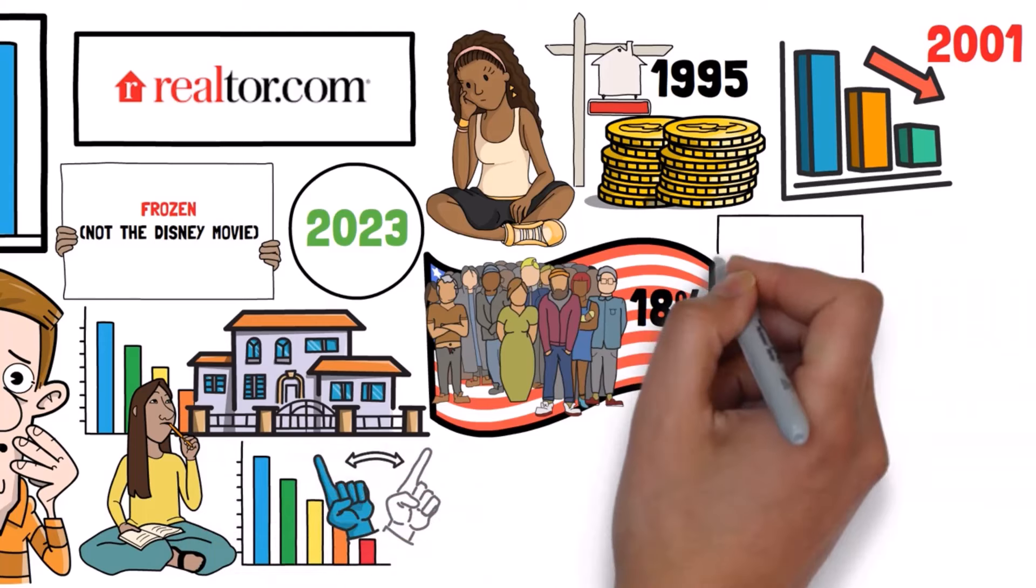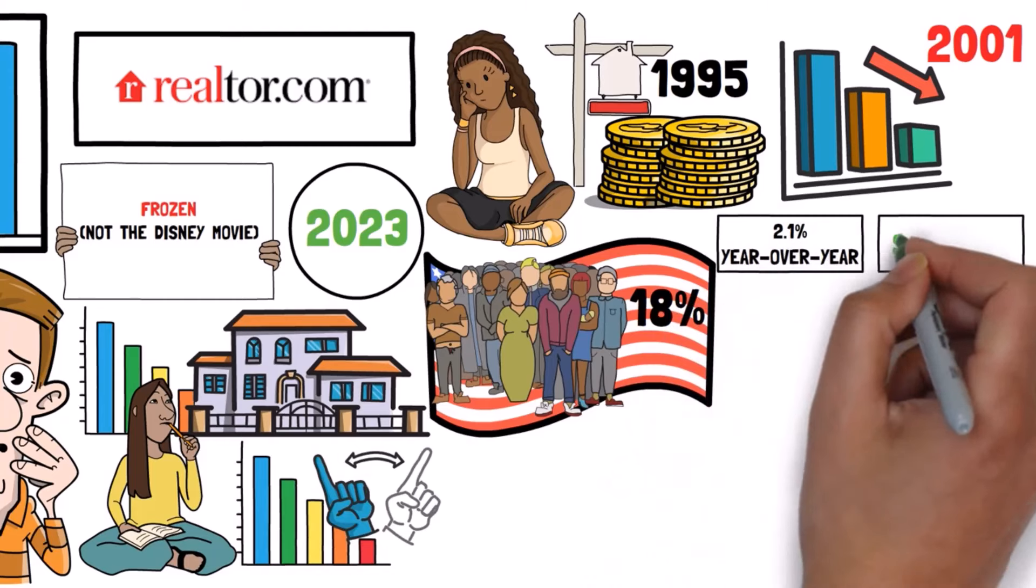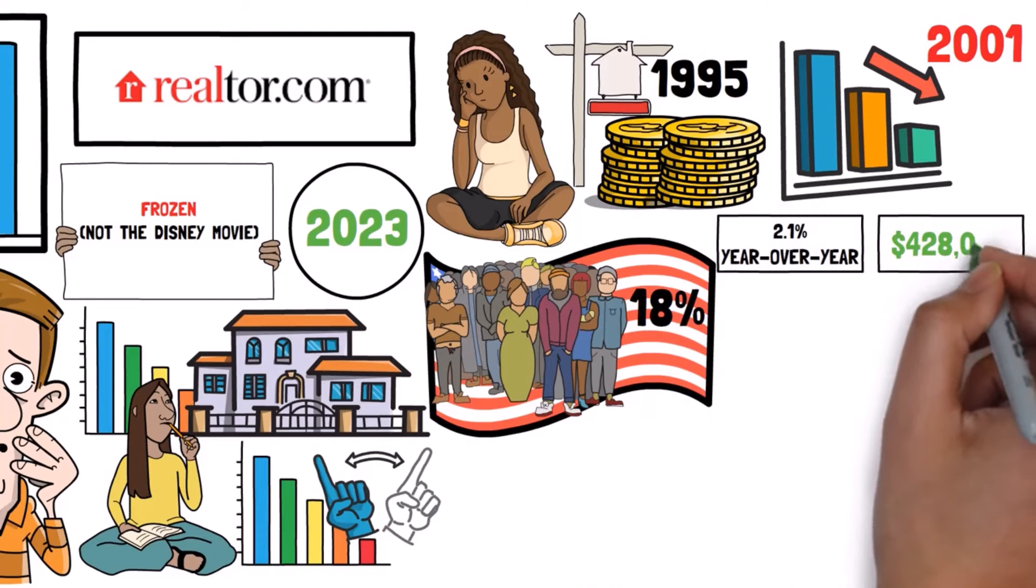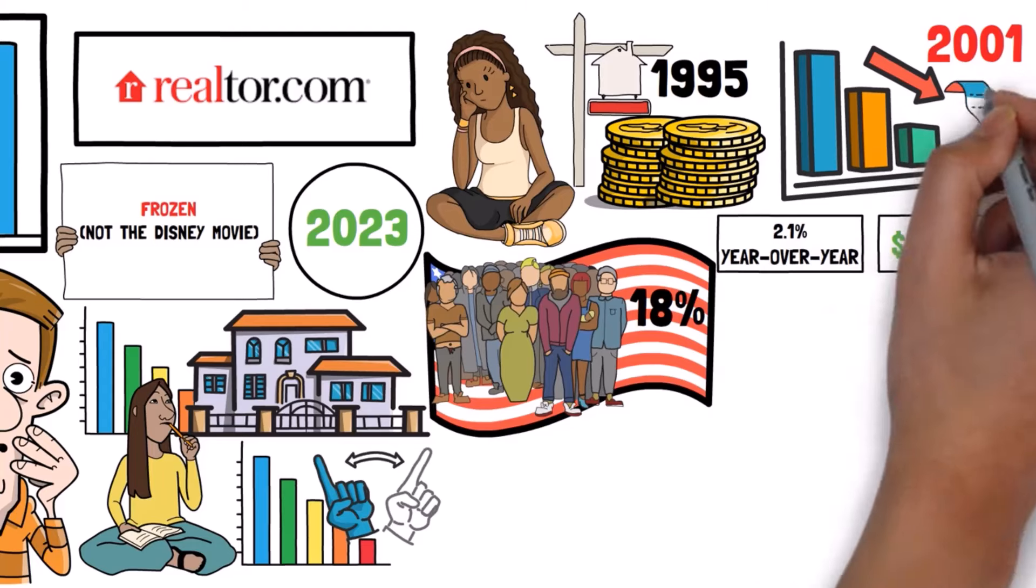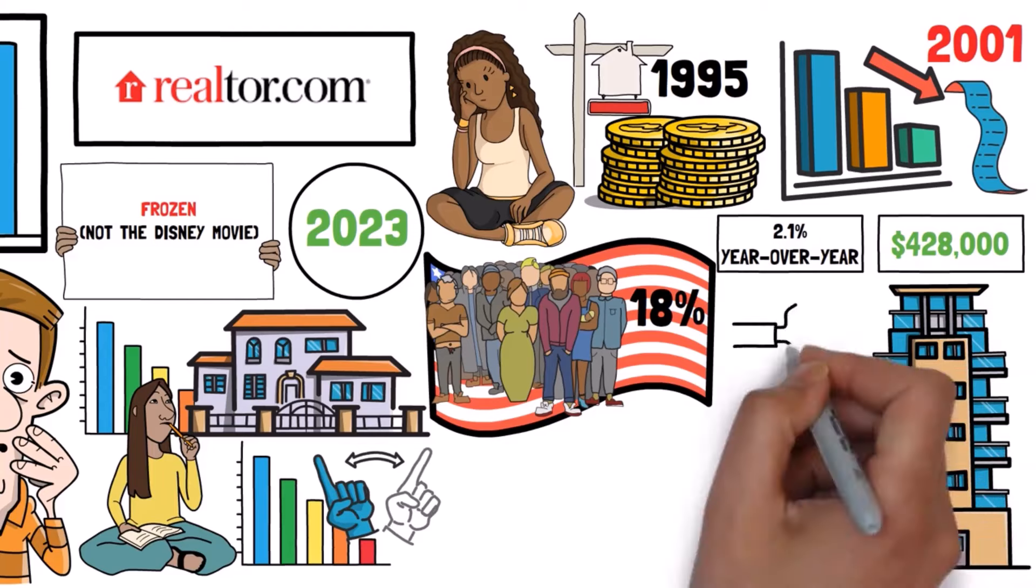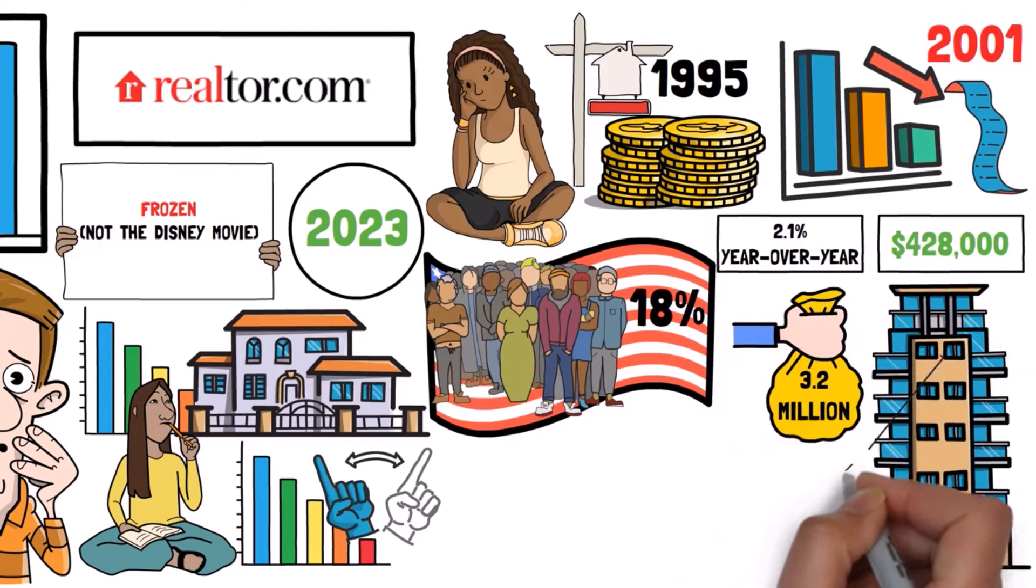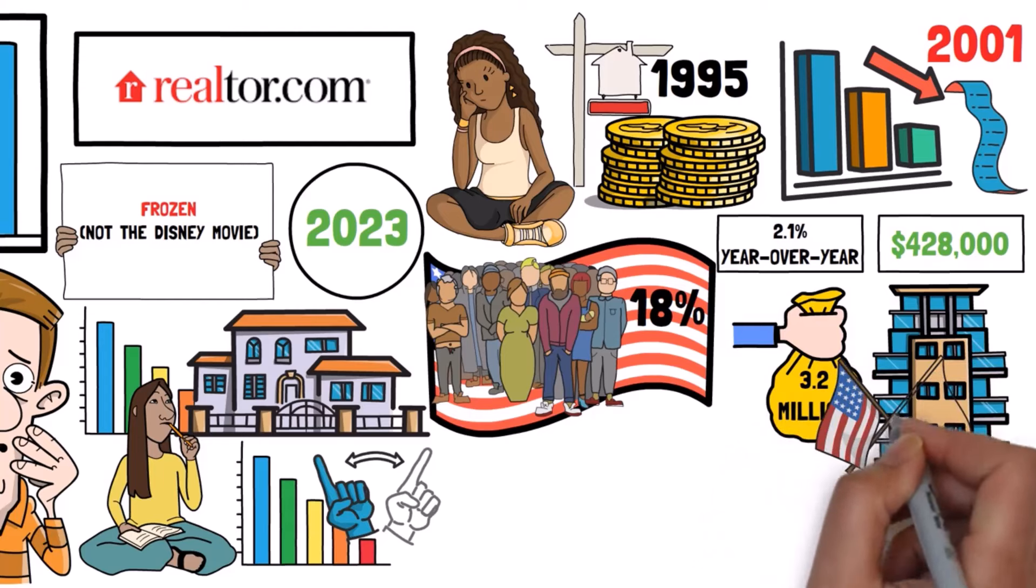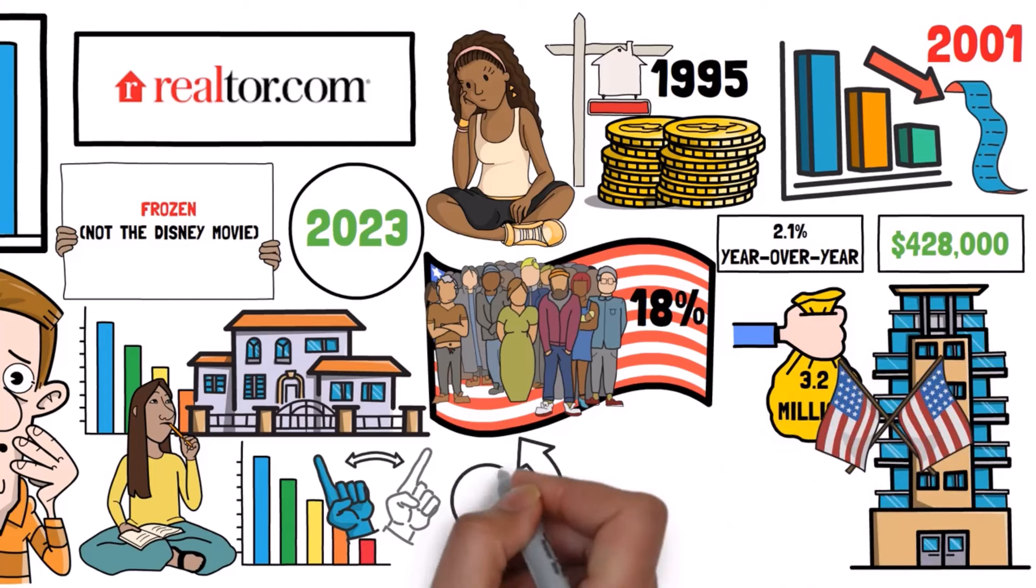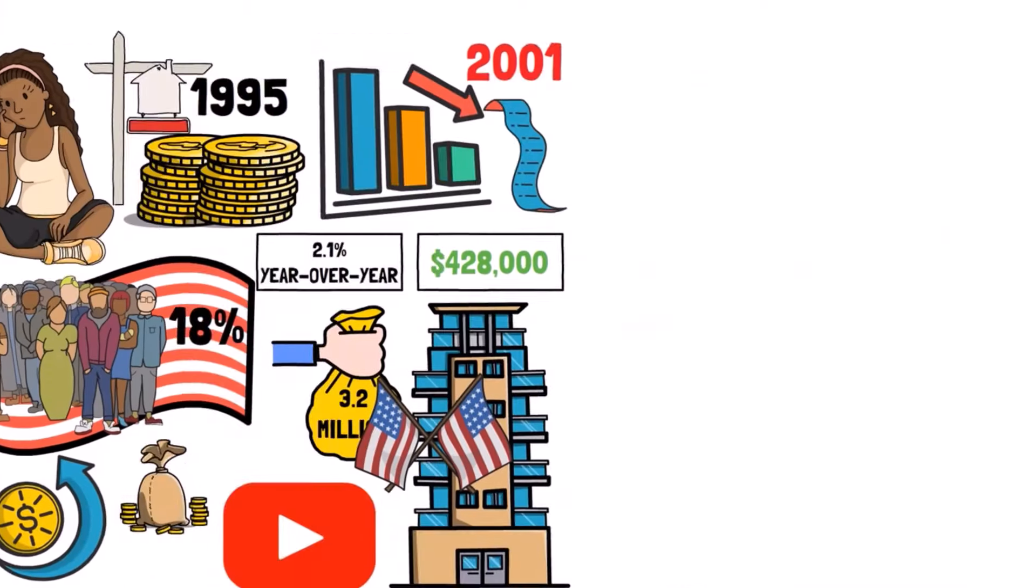Instead, the median price went up by 2.1% year-over-year to $428,000, setting a new record. The problem is that home builders can't keep up with the high demand due to increased financing costs, leading to a 3.2 million unit shortage across the United States. This shortage is causing prices to rise even further, making homes more expensive, and giving me plenty to discuss here on YouTube.